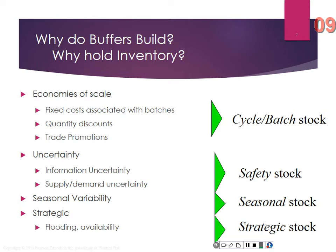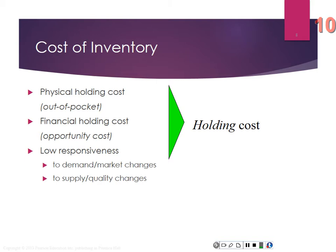We also have seasonal variability. The easy example is Christmas: it doesn't make sense to produce in February for December, but you can't produce everything demanded in December in December. And there's strategic stock for availability. We have different costs of inventory — physical holding costs, financial holding costs as opportunity cost, low responsiveness to demand and market changes, and supplier quality changes. If you have a bunch of inventory, you're committed to that path.